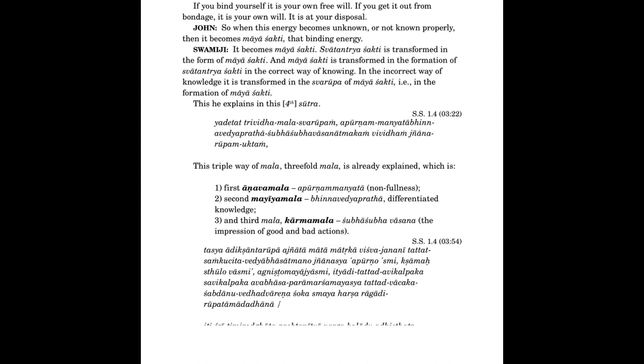This triple way of mala, three-fold mala, is already explained. Which is first, anu mala, upurnam manjata. Second, mahi mala, binavedi pratha, differentiated knowledge. And third mala, kharam mala, which is shubha shubha vasana. So this is adikkhyanta roopa, agyata, mata, matrika.